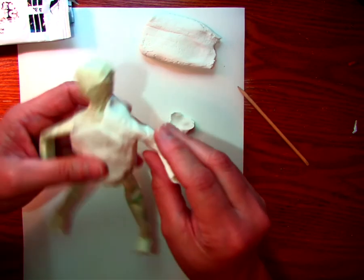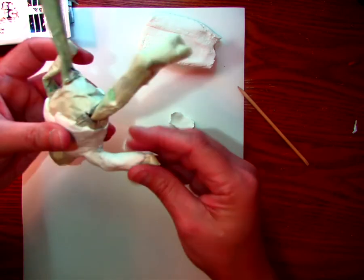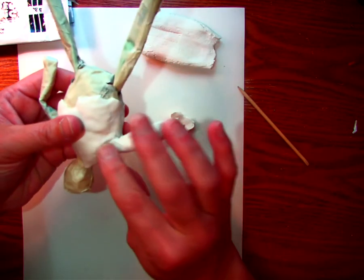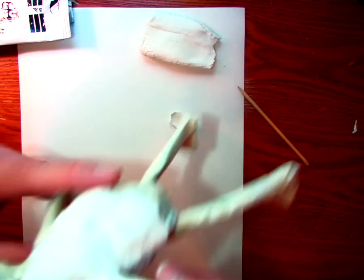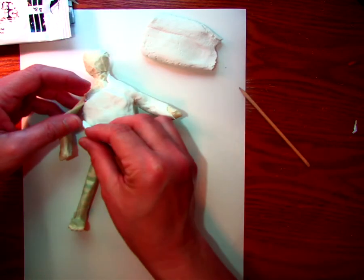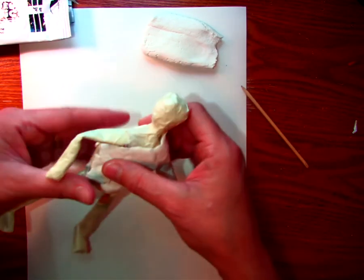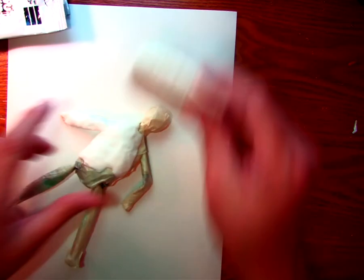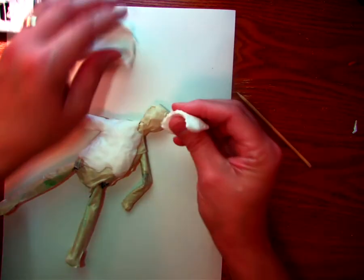But you can do either one honestly. This just works really well if you want to make something a little bit sturdier. And then you can use this as a cool way to add details and to cover the outside part. So I'm just going to go ahead and cover this whole thing with the Model Magic and then like I said I can add details.